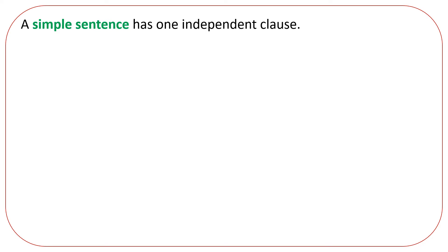A simple sentence has one independent clause. We made pizza. We have a subject and a verb — it's a simple independent clause.